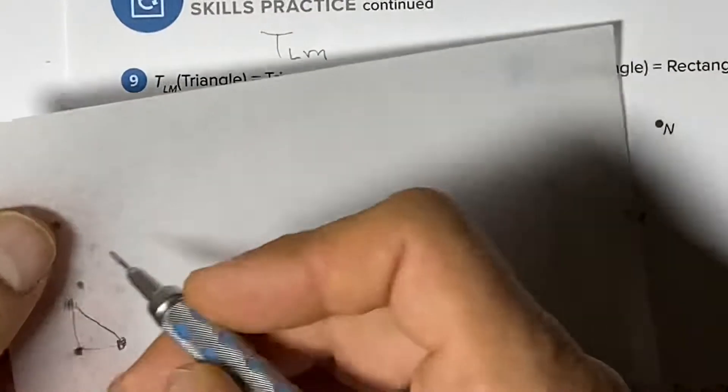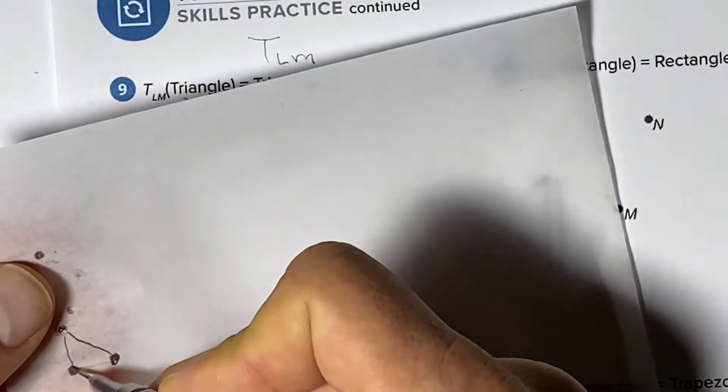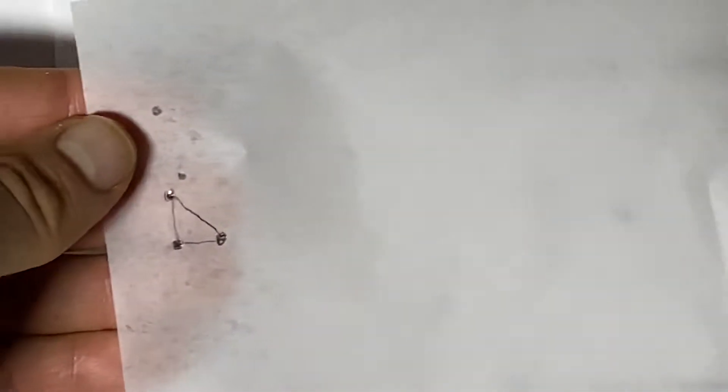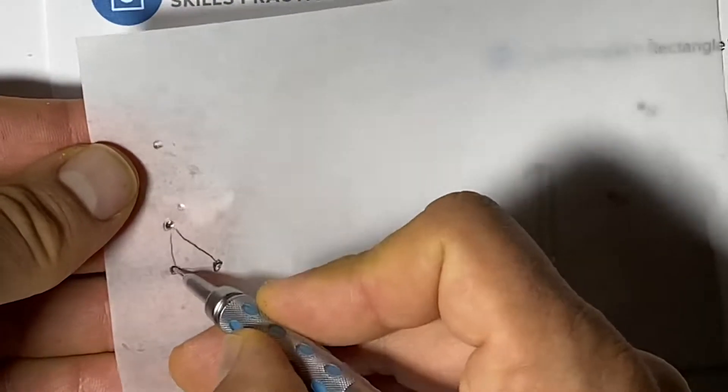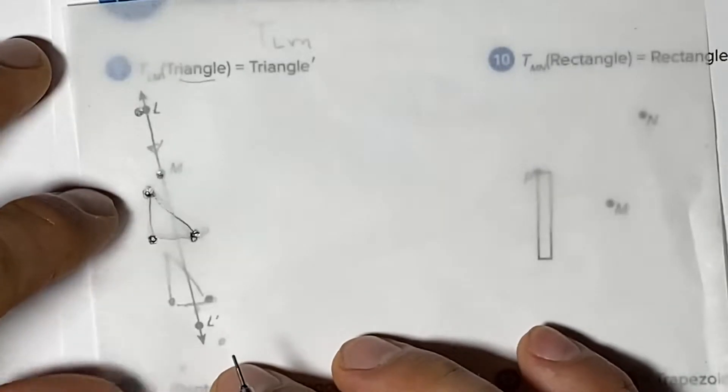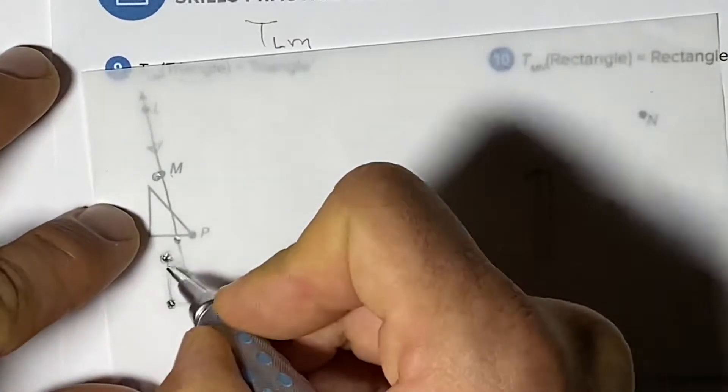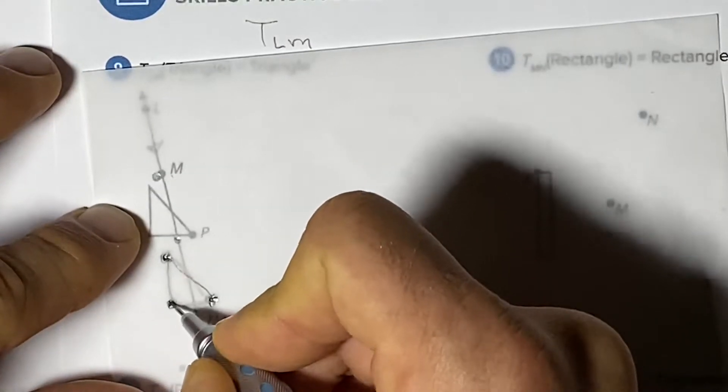Otherwise we can poke three holes in our tracing paper. Poke a hole, poke a hole, poke a hole. We can do the translation, slide it and draw through the little holes we poked.